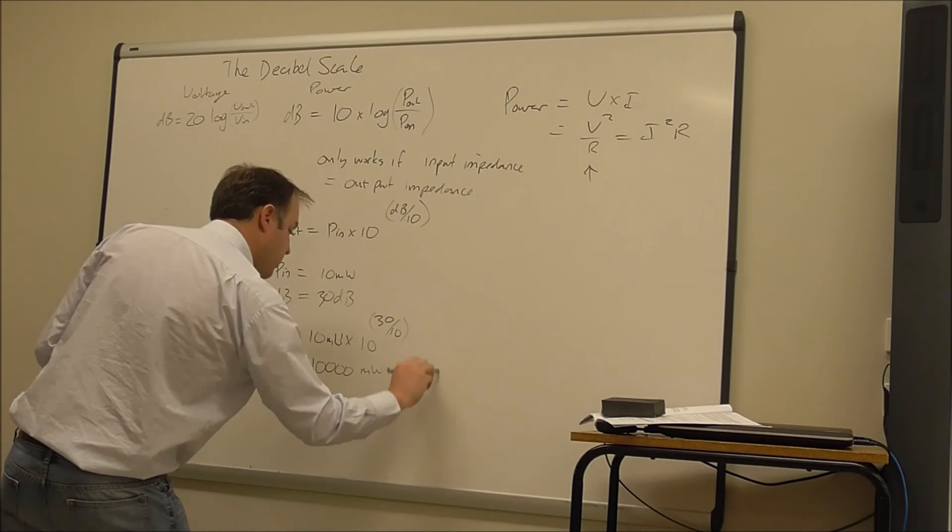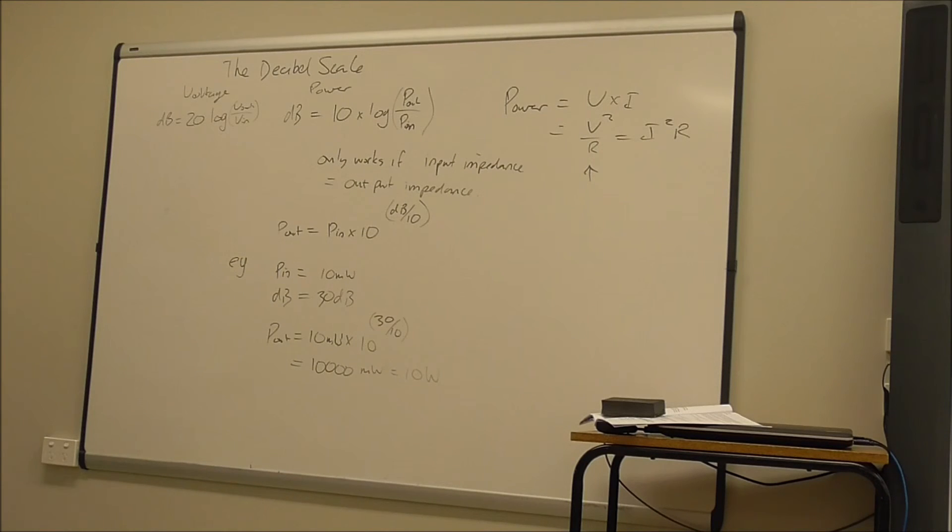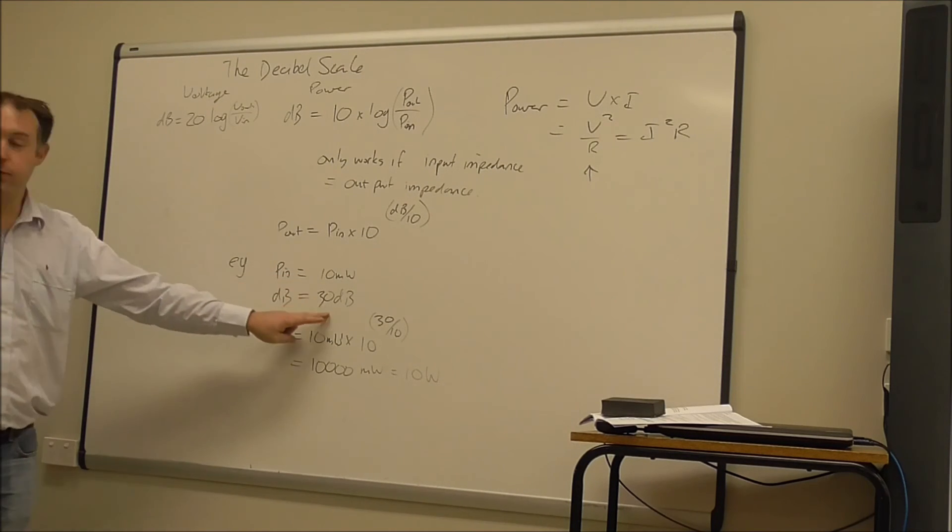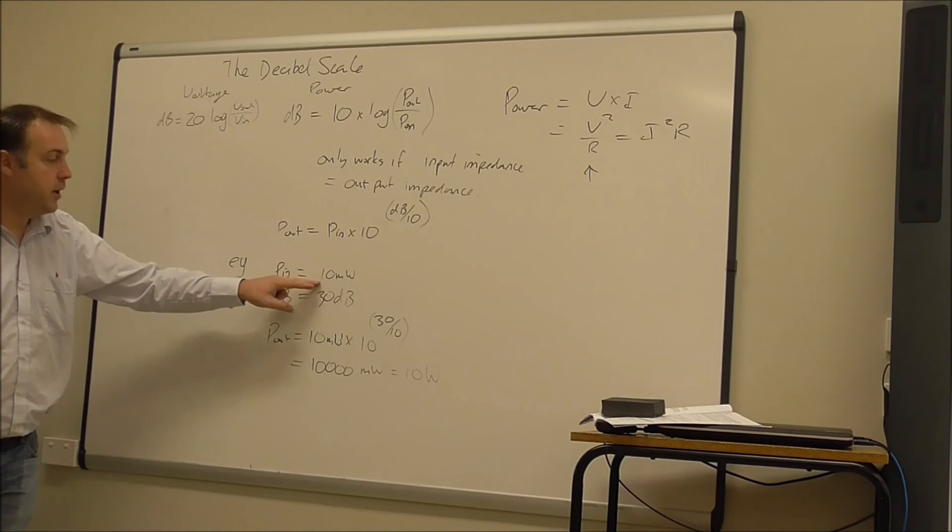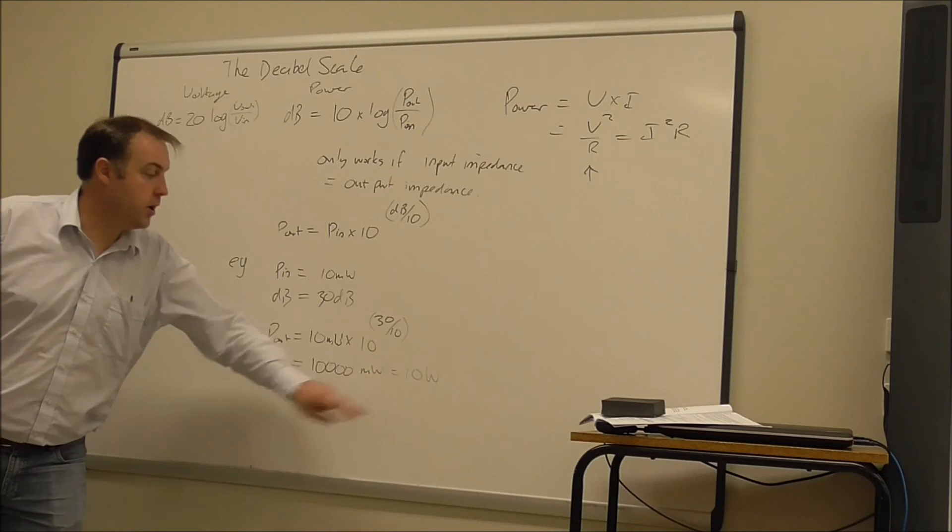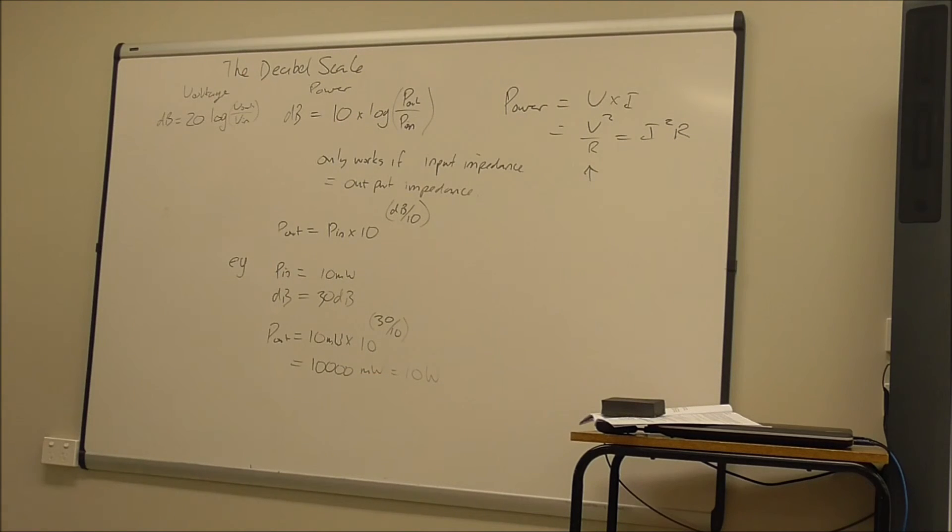10 watts. So if I had an amplifier that was a 30 dB amplifier and input power was 10 milliwatts, then the output power would be a thousand times that, or 10 watts.